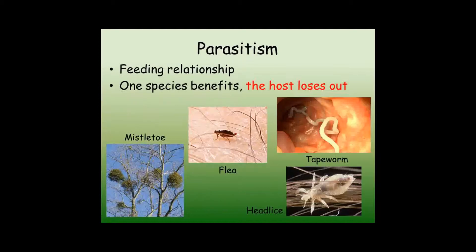We've seen that animals can have a predator-prey relationship. We'll now look at other types of feeding relationships that animals have between different species. Parasitism is where one species survives by feeding on another without the other species being killed. For example, head lice, tapeworms, fleas, and mistletoe. In each of these, one species gains energy from the relationship while its host suffers.